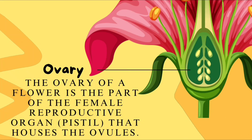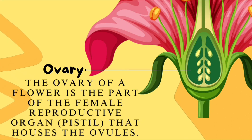This part of a flower is called ovary. The ovary of a flower is the part of the female reproductive organ, pistil, that houses the ovules.